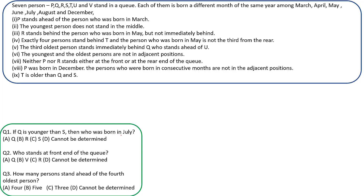Hello everyone, let's look into a linear arrangement set. Seven people — P, Q, R, S, T, U, V — are standing in a queue, each born in a different month of the same year: March, April, May, June, July, August, and December. We have some information given, let's see what it is.